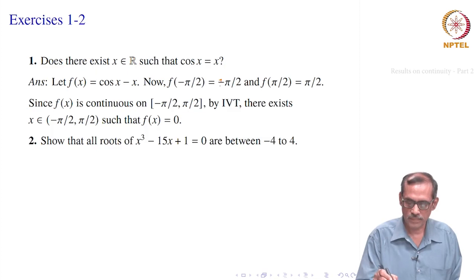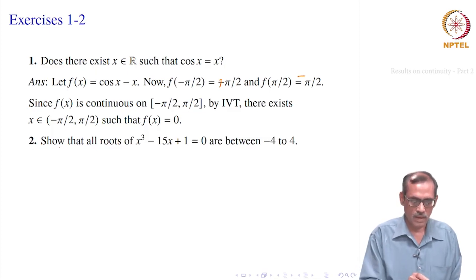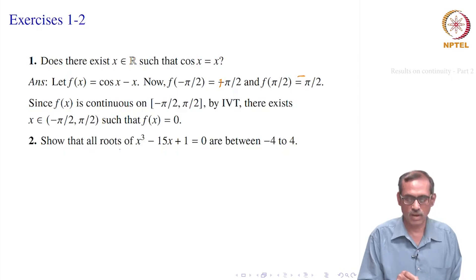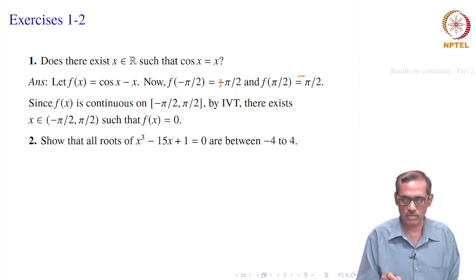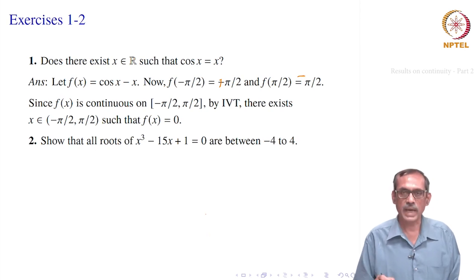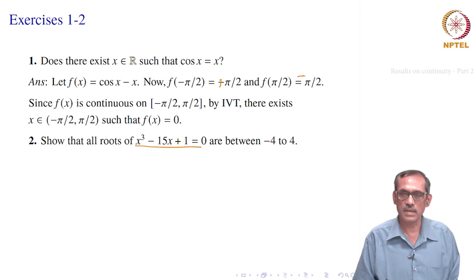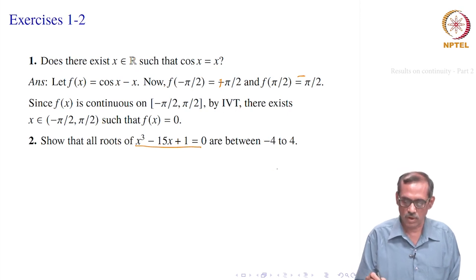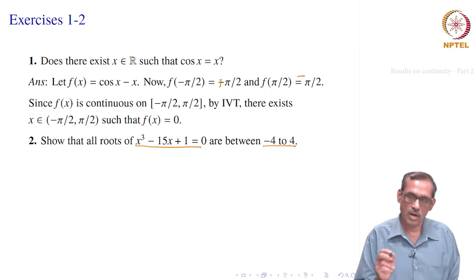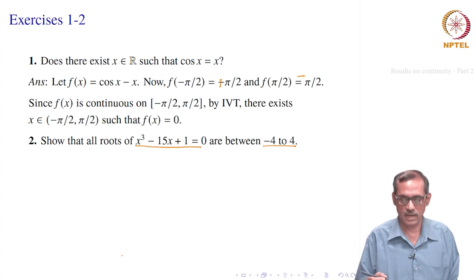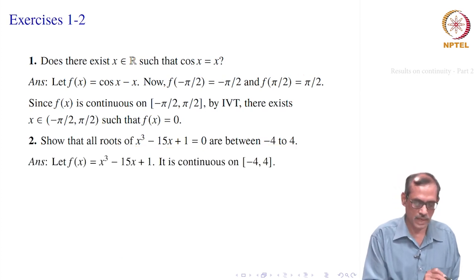Now the second problem: show that all roots of x³ − 15x + 1 = 0 lie between −4 and 4. We will use the Intermediate Value Theorem. We know from an earlier example that this is a cubic, so it has a root in the real numbers. But we need to show more — that there is a root between −4 and 4, and not just one root but all roots. We have to find points where the function alternates sign.